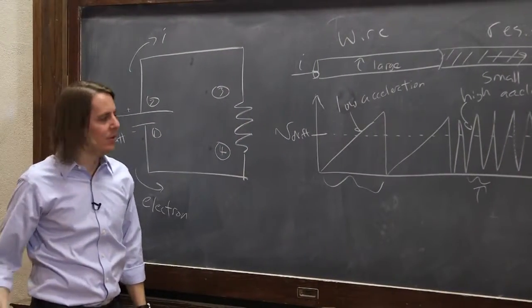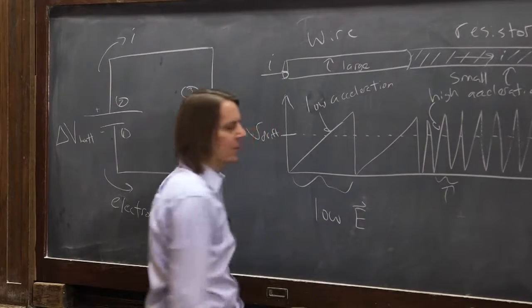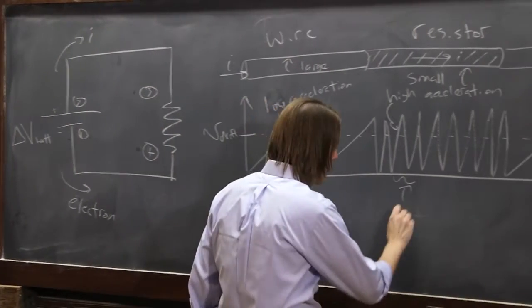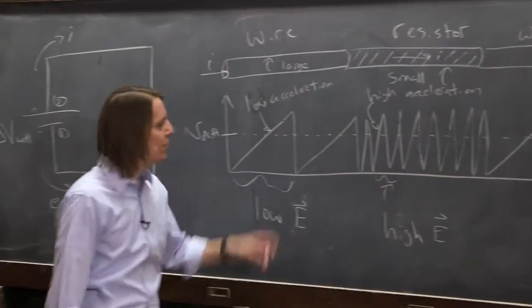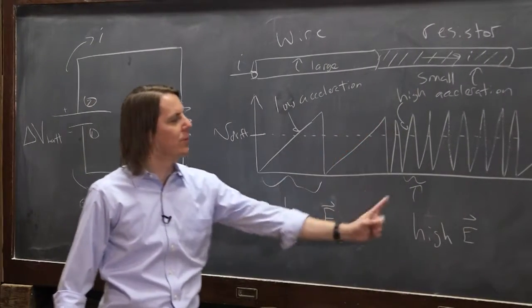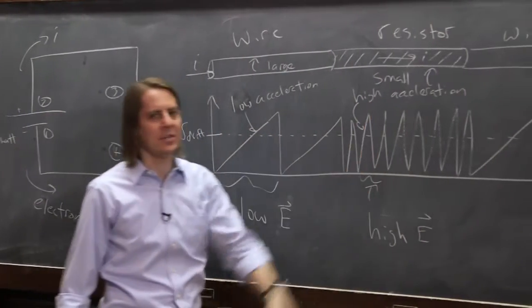That acceleration comes from the field. What that means is here you have a low E field. And here you've got to have a high E field. Because that's what sets. Remember this is QE over M. Q is the charge. M is the mass. Those are constant. It's the electric field that's changing.